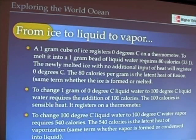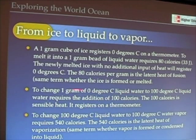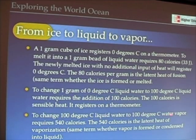Let's take a closer look. Taking a gram of ice at zero degrees: if we melt it to a gram of water, it takes 80 calories — that's the latent heat of fusion. A gram of zero degree water to 100 degree C water requires 100 calories — that's the sensible heat we can measure on a thermometer. And then to change 100 degree liquid water to 100 degree water vapor takes 540 calories, or the latent heat of vaporization.